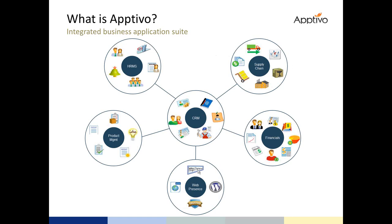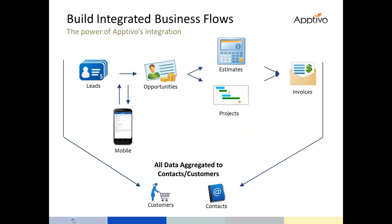The idea behind Aptivo is that every business has different needs, and they have different needs at different times. You might be looking for just a CRM platform right now, or maybe just supply chain, or some combination — like project management, time tracking, and invoicing. Aptivo is designed around our app store, where you can pick and choose applications and build them into a business process.